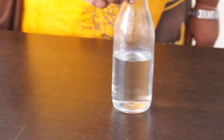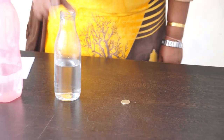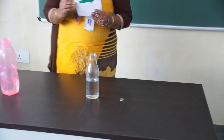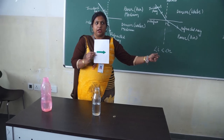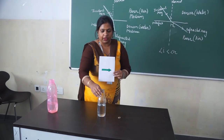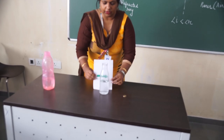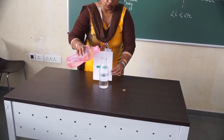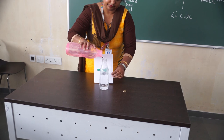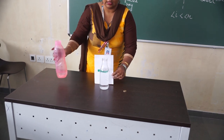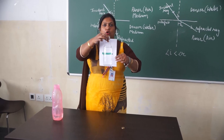One more activity we can show with the help of this water: if we take an arrow, right now the arrow is pointing towards my right. But if you see that arrow through this water bottle, then you will see the arrow pointing towards my left. That is because of refraction of light.